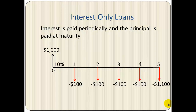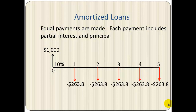With interest-only loans, we again have a borrower who needs one thousand dollars at ten percent. This time interest payments are made every year in the amount of one hundred dollars — ten percent of one thousand is one hundred dollars. So there are five payments of one hundred dollars, and at the end upon maturity the principal amount of one thousand dollars is also paid.